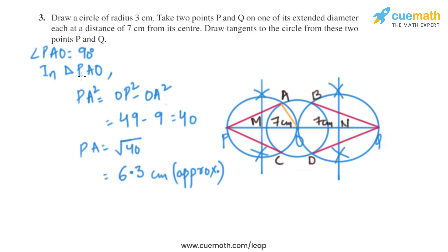Let's do the justification of this construction. Angle PAO equals 90 degrees. So if we take triangle PAO and use the Pythagorean theorem, we'll get PA squared equals OP squared minus OA squared, and we'll get the value of PA as square root of 40, which is same as 6.3 cm approximately. Similarly, we can find the length of the other tangents.